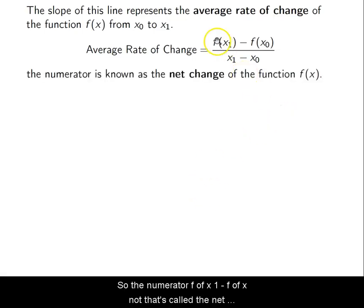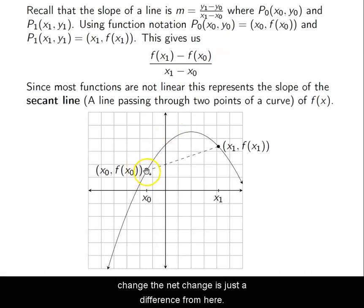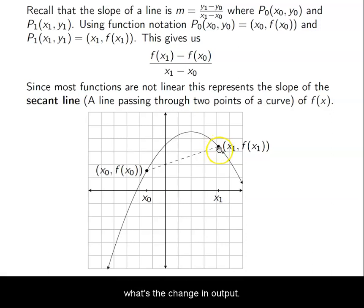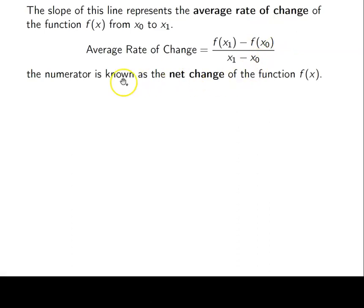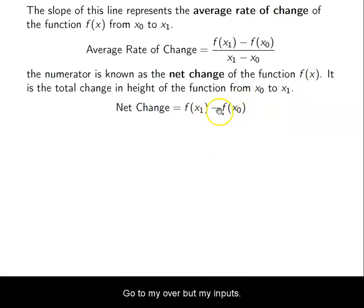The numerator, f of x1 minus f of x0, that's called the net change. The net change is just the difference from here to here — the up and down. It's basically like y1 minus y0 — the change in height of my function. At this point I had this as an output, at this point I have this as an output. What's the change in outputs? f of x1 minus f of x0 — it's the total change in height of my function over both of my inputs.